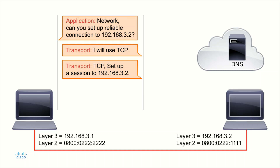You might be wondering how this machine and even this application know what address the destination is — how do we know that 192.168.3.2 is who we want to talk to? That's where the DNS server comes into play. Let's say we're sending an email that needs to go through a mail server. When we plug in our mail server settings, we plug in a fully qualified domain name — it might be mail.something.com. We resolve that using DNS, which might point us to 192.168.3.2. DNS is just a separate application.